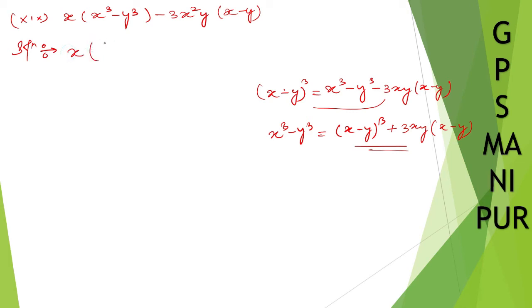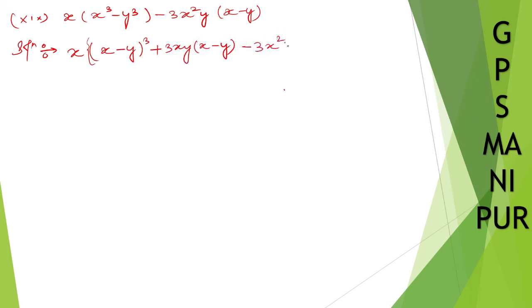x into x minus y cube. So let me put the bracket here. Plus 3xy x minus y. 3x square y x minus y. So let me close the bracket here.